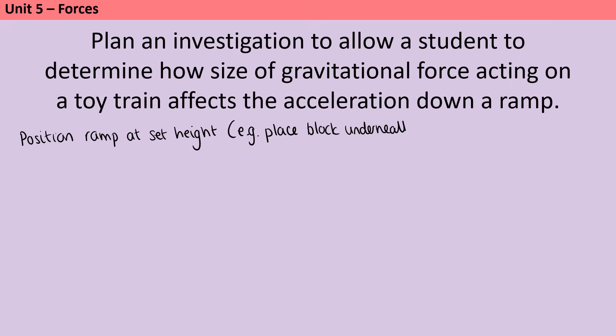And then we would place the train that they've mentioned at a set position. So we're always going from the same height, and therefore that's a control variable. And since they've mentioned that we're going to be investigating the size of the gravitational force, we could talk about having that train pulled by a pulley, or in this instance we could just talk about adding some masses to the top. We would then need to say that we would position the light gate a particular distance down the ramp.